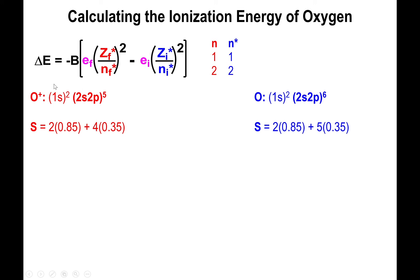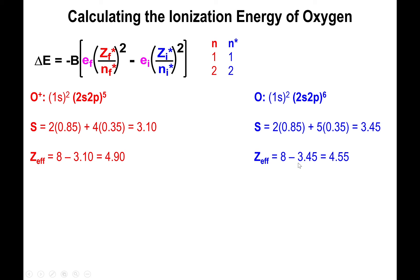Applying Slater's rules: for O⁺¹ with five electrons in the 2s2p group, four of them shield the fifth by 0.35 units each, and the two electrons in the 1s orbital shield by a factor of 0.85. For neutral oxygen with six electrons, five of them shield the sixth by 0.35, and the two 1s electrons shield by 0.85. The corresponding shielding constants are 3.10 for O⁺¹ and 3.45 for O⁰, giving effective nuclear charges of 4.90 and 4.55 respectively.